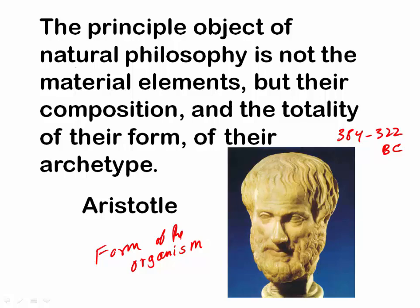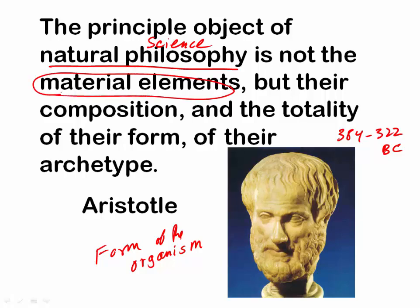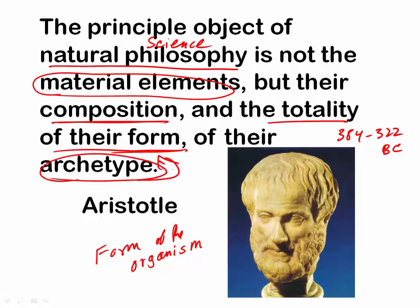A key quote illustrates Aristotle's ideas: 'The principal object of natural philosophy' — what we now call natural science — 'is not the material elements, but their composition, how they're put together, the totality of their form.' We could substitute the word archetype for form here. So it's not just the shape of the organism, but the ideal behind it — some reality behind the organism that is not just that organism, but is something greater, and that's what makes it that organism.